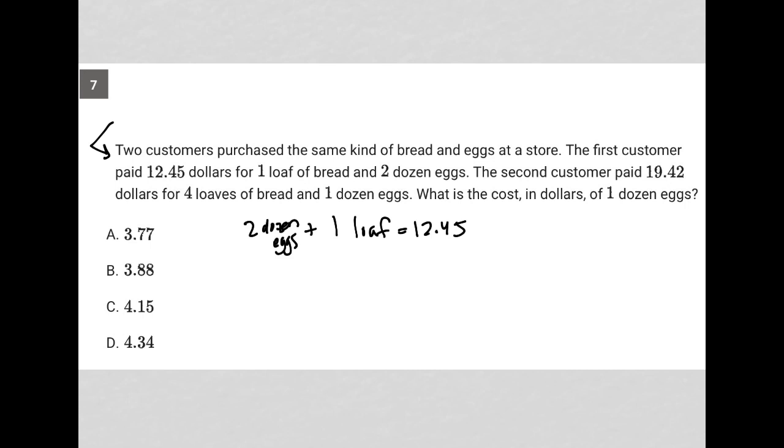The second customer paid $19.42 for four loaves, so three additional loaves, and one dozen eggs. So half the amount of eggs got them to $19.42. What is the cost in dollars of one dozen eggs?